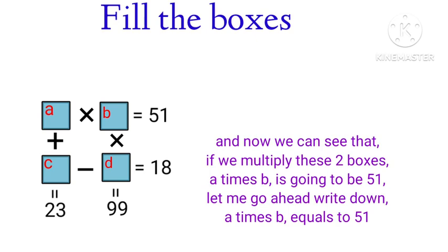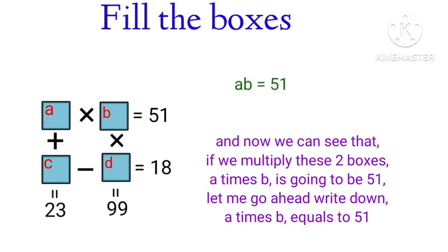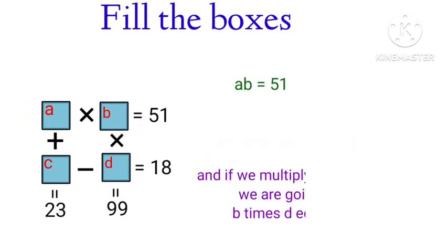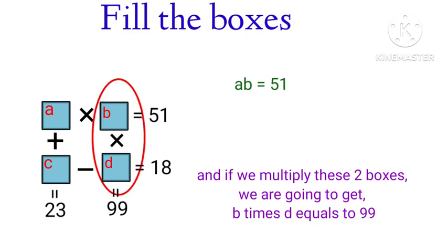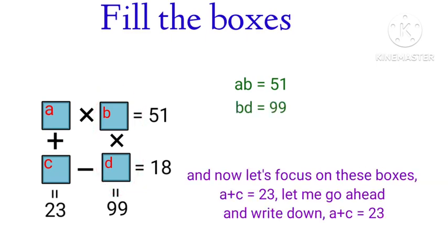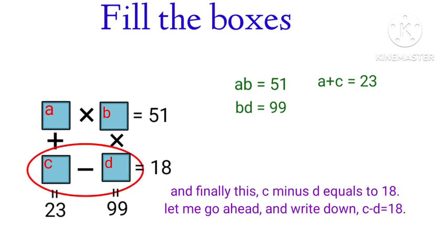We can see that if we multiply these 2 boxes, A times B is going to be 51, so A times B equals 51. If we multiply these 2 boxes, B times D equals 99. Now focusing on these boxes, A plus C is equal to 23. And finally, C minus D is equal to 18.